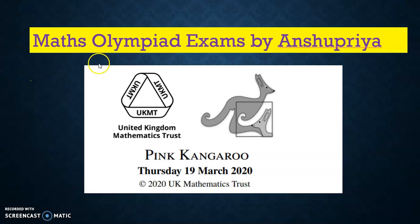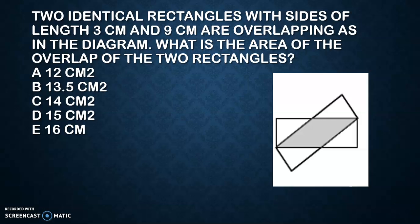Hi everyone, we are here again to learn some challenging UKMT problems in a very different approach. Let's see our first question. Here we see there are two identical rectangles - identical means their length and breadth will be same. So the rectangle is 9 centimeter by 3 centimeter, and they are overlapping as shown.